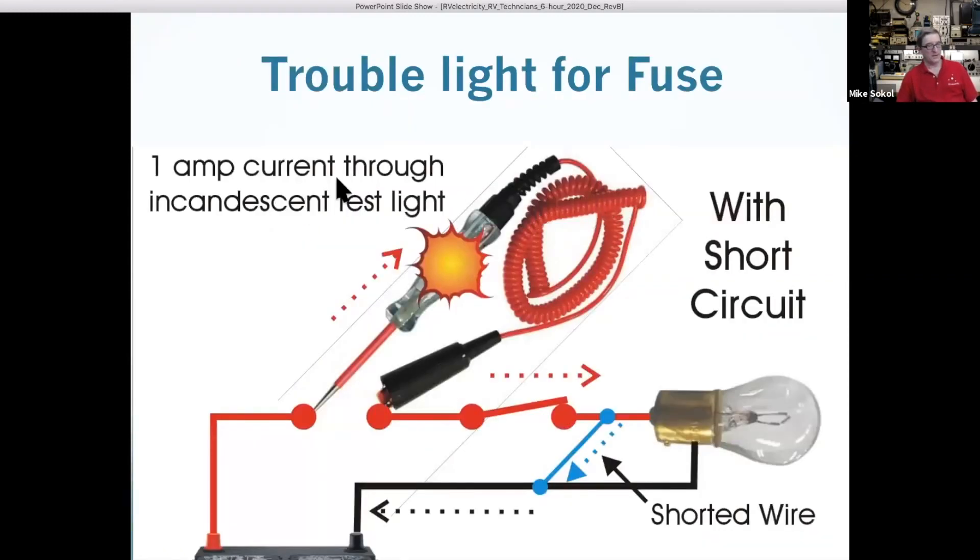So I came up with this. You stick a trouble light across where the fuse would have been, and then you close the switch. Now it limits it to say one ampere or so of current through the test light, but it still doesn't tell you how to trace where the wiring is.